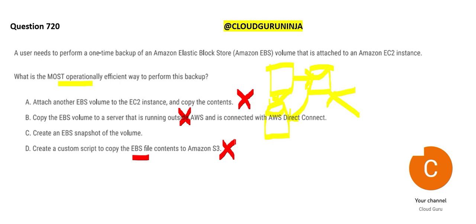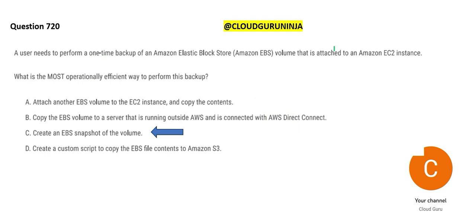Option D says create an EBS snapshot of the volume. This is a better option — why? Because the number of steps is less, that's why it is efficient. It is simple to do, and there is no downtime of the application, so your production can still be running when you take the snapshot. You can also take incremental snapshots, but since we just want a one-time full backup, option C — create an EBS snapshot — is the right answer.